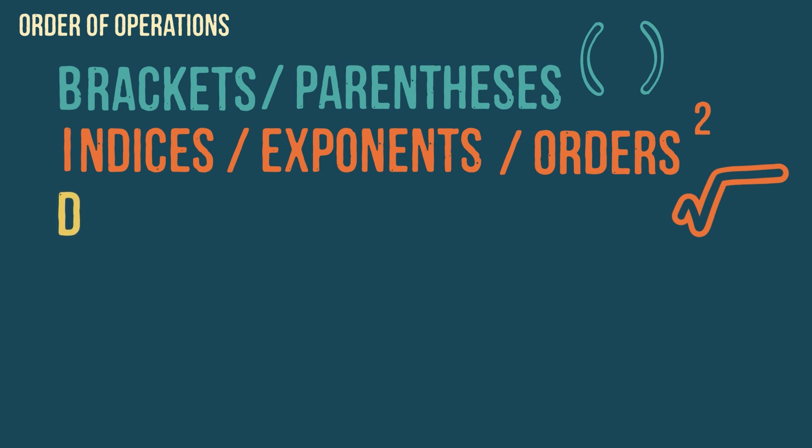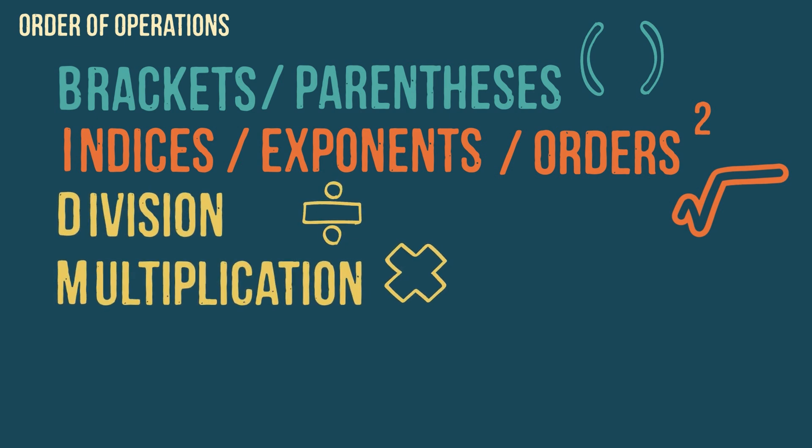Next we have D and M, which stand for division and multiplication. It is extremely important to remember that division and multiplication have the same importance. We calculate them in whatever order they appear in the question, from left to right. So depending on the question, either division or multiplication could come first. This is a crucial point to remember, as the acronyms themselves can sometimes cause confusion.